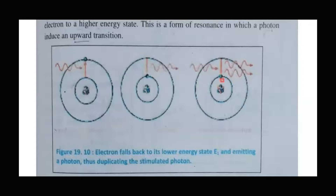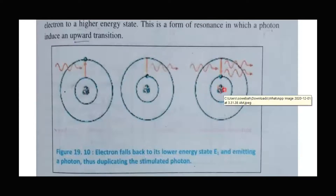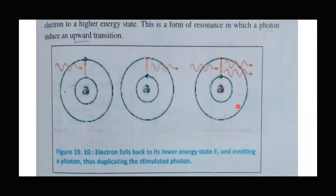You can say that spontaneous emission is natural. To form a laser in the form of a large number of photons, we need stimulated emission — the triggered emission, or the emission of photons caused due to external photons.